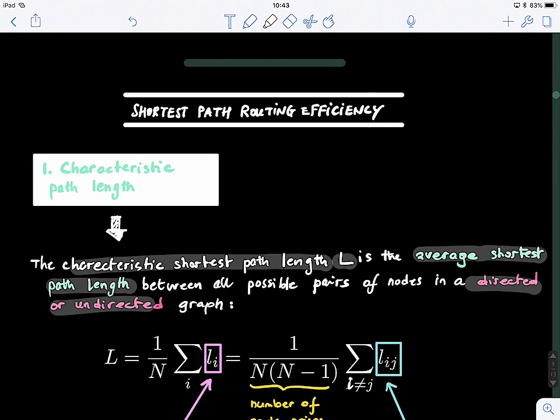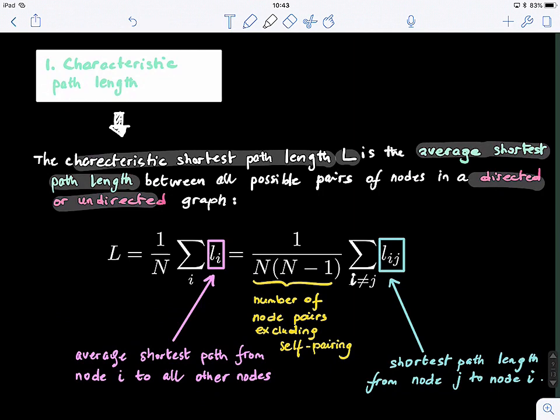How do we define it? We take the average across all nodes in the graph. Here, this is the average shortest path from node i to all other nodes. If you want to expand it, this is the number of node pairs excluding self-pairing, and we sum the shortest path length. L here is the shortest path — not any path — the shortest path length from node j to node i.